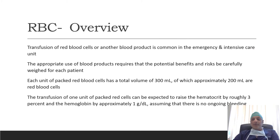The transfusion of RBC is very common in the practice of emergency medicine and intensive care unit, and the appropriate use of blood products requires that the potential benefit and the risk should be carefully analyzed for each patient and before each transfusion. Each unit of packed red blood cells has a total volume of around 300 ml, out of which approximately 200 ml are red blood cells. Assuming no ongoing bleeding, transfusion of one unit can be expected to raise the hematocrit by roughly 3% and the hemoglobin by approximately 1 gram percent.